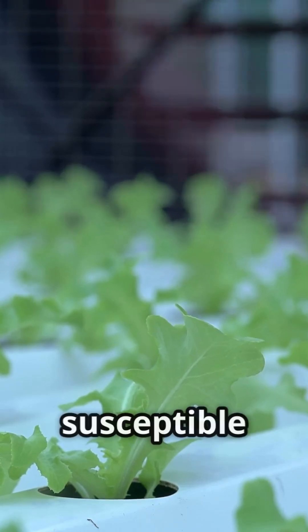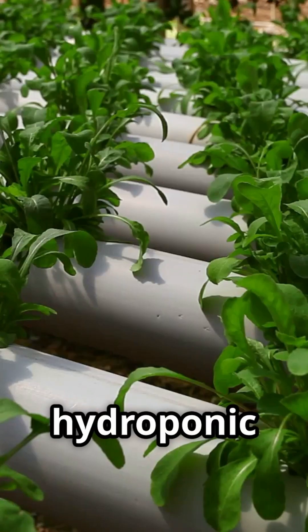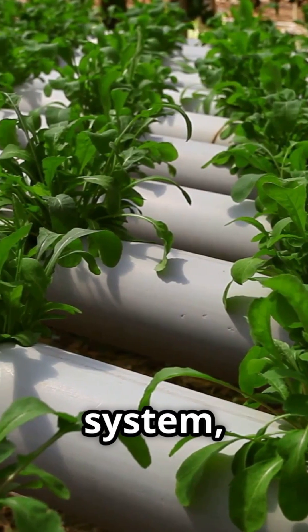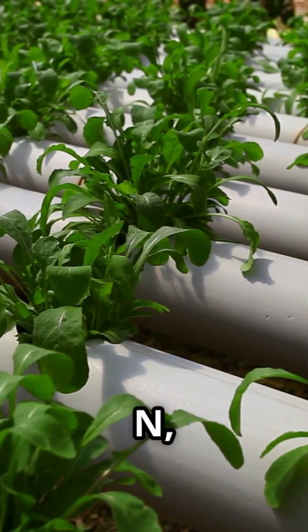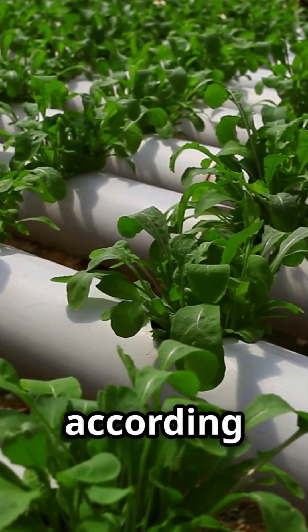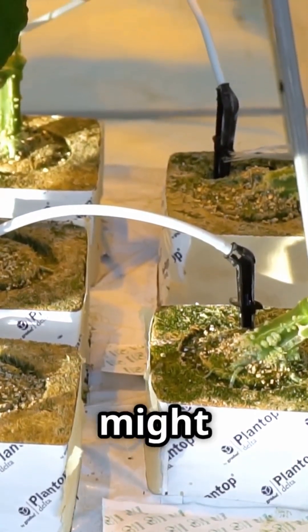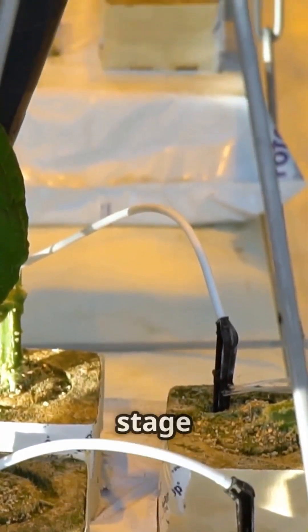Most hydroponic nutrients come in a three-part system, meaning you have separate bottles for N, P, and K. This allows you to customize the nutrient mix according to the specific growth stage of your plants. For instance, you might use more nitrogen during the vegetative stage and increase phosphorus and potassium during the flowering and fruiting stages.